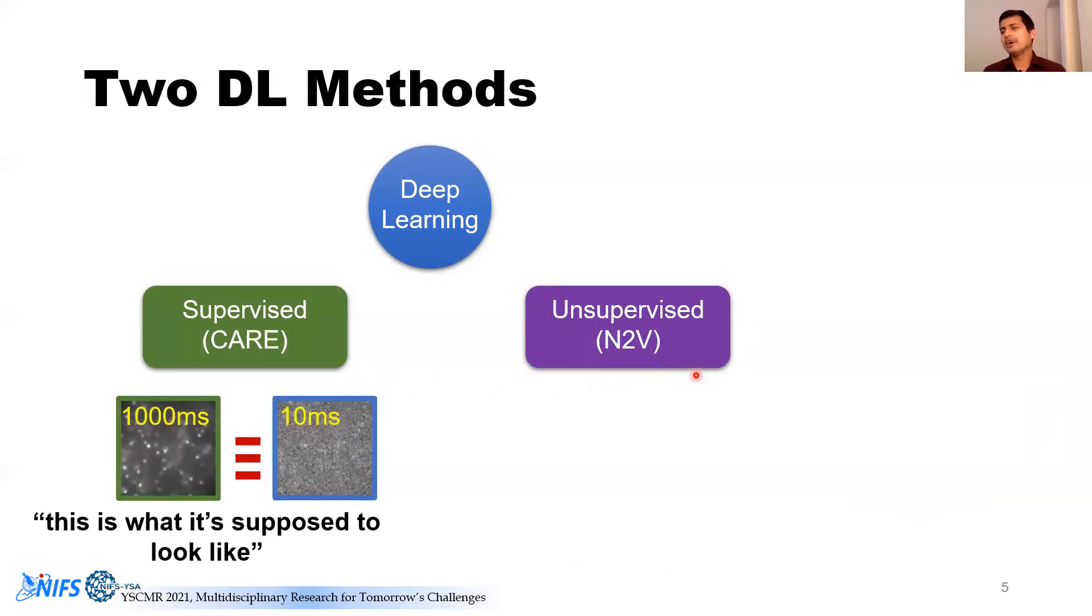To understand CARE, basically, you feed pairs of images taken at different exposure times. You're telling the computer to learn from these two images. This is what it's supposed to look like, because it already has prior information.